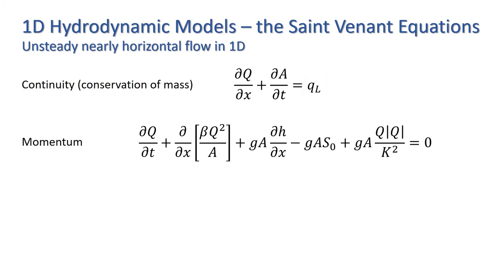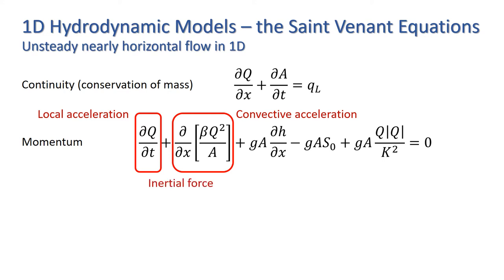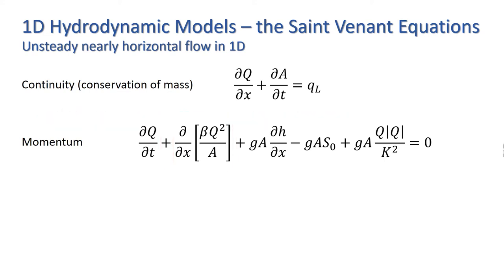Moving on to the momentum equation, we have a local acceleration term and a convective acceleration term. Collectively, these two terms relate to the inertial force. Next, we have a pressure force term. And finally, we have a gravity force and friction force term. These two terms, sometimes written on the right-hand side of the equation, are also source terms.